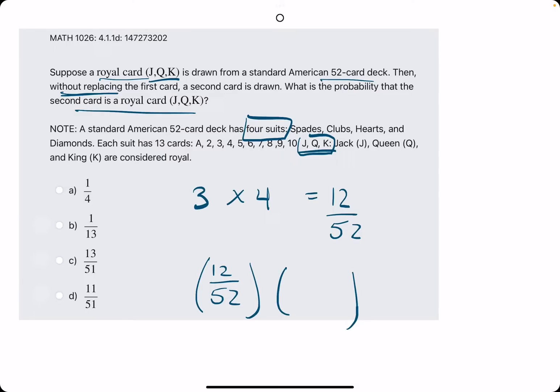So they say then, without replacing the first card, meaning we're keeping that one card, so there are now just 51 cards in the deck. What's the probability that that second card is a royal card? Well, if we pulled one of the 12 already, then there are just 11 left.